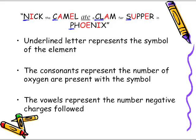The consonants represent the number of oxygens that are present with the symbol that starts off each word. And the vowels represent the number of negative charges that follow. We're going to see that breakdown right now.